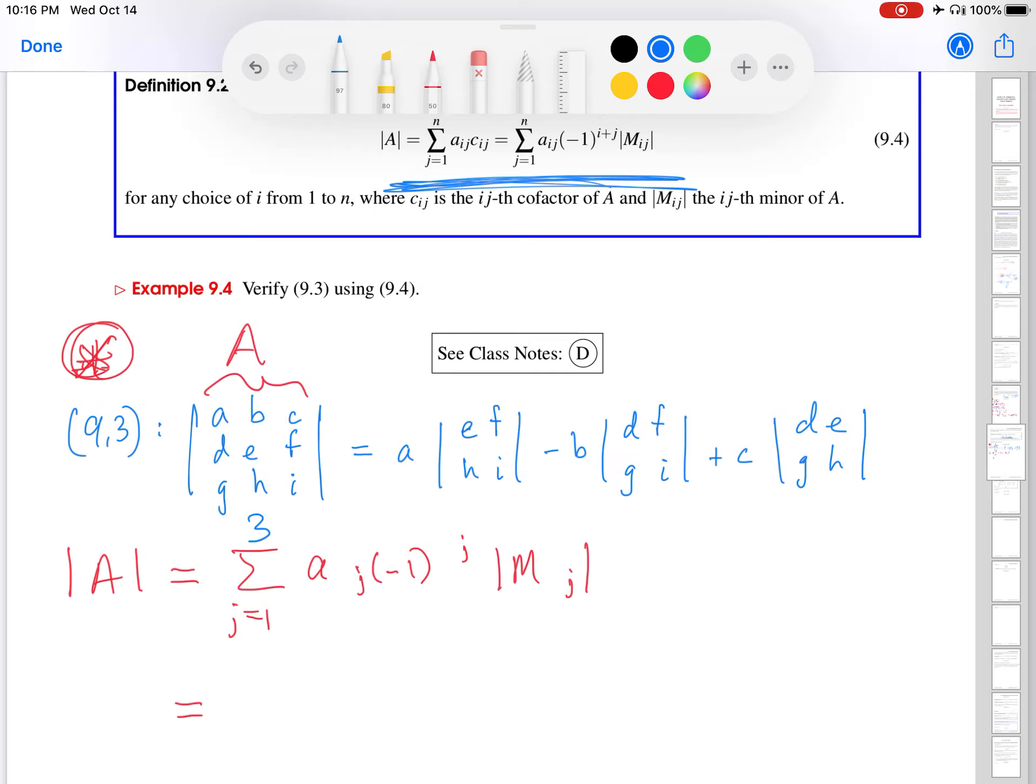But again, because in 9.3, I was using the first row of the matrix, that's what I'm going to do here. So I'm going to use a 1 here and put a 1 here and put a 1 here. In other words, I'm putting a 1 everywhere I see an i.